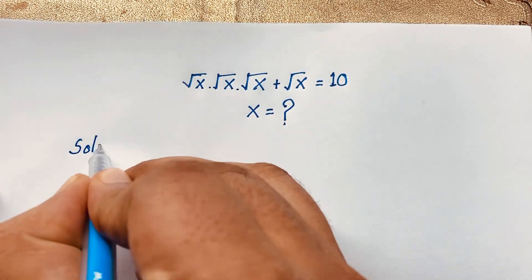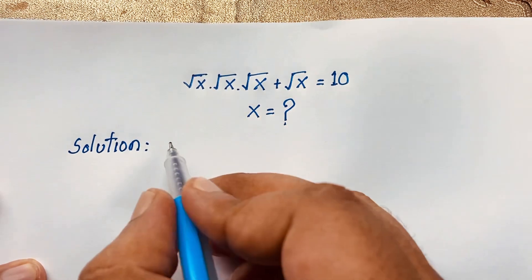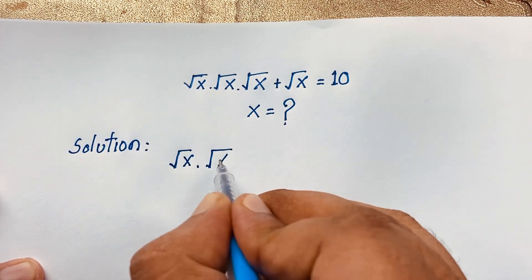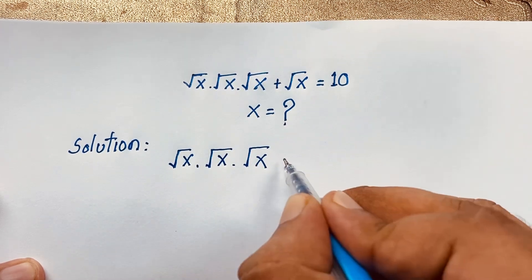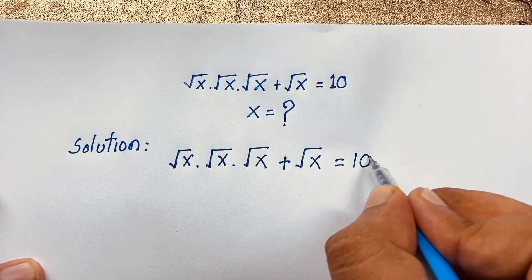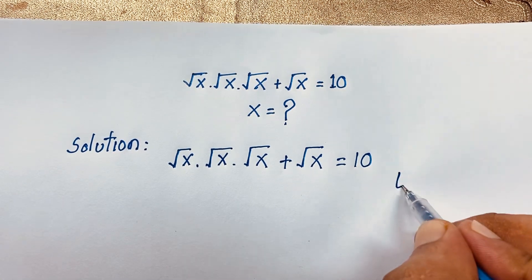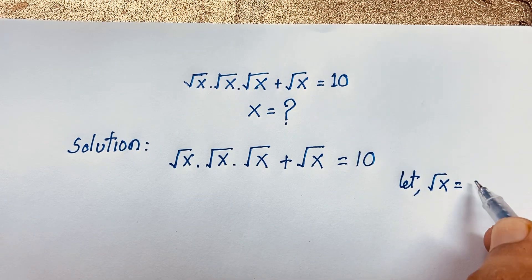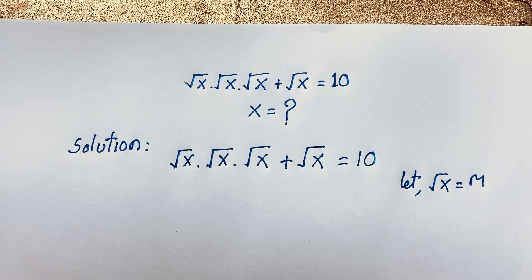Our math solution: I take our question, which is square root x times square root x times square root x, plus square root x, is equal to 10. This is our question. Now at this moment, let square root x equal m.